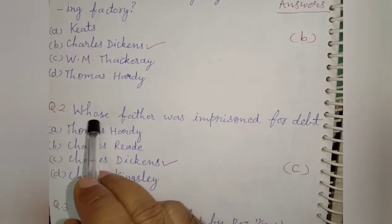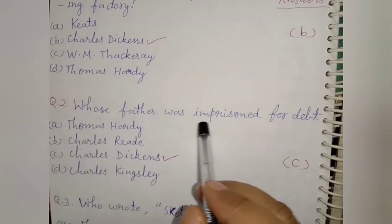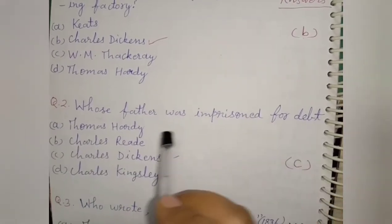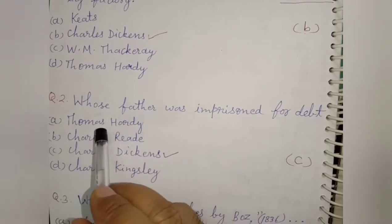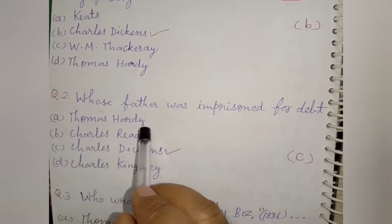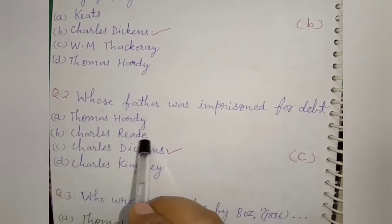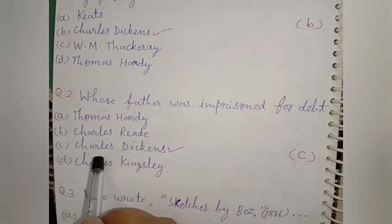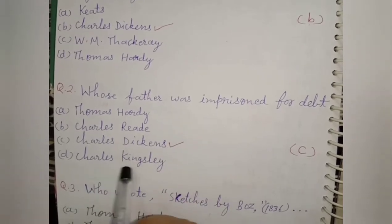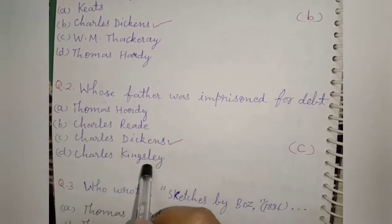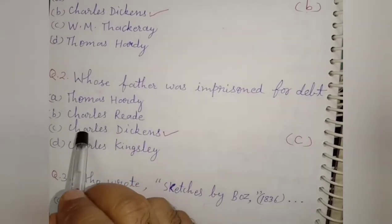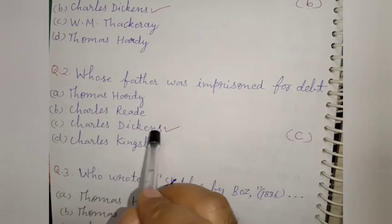Question 2: Whose father was imprisoned for debt? The options are Thomas Hardy, Charles Reade, Charles Dickens, and Charles Kingsley. The right option is C, Charles Dickens.